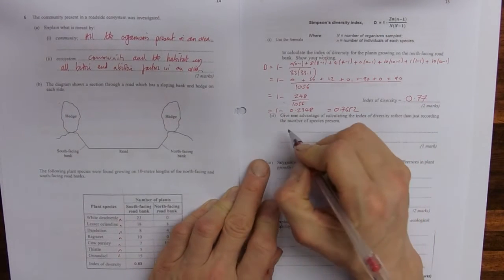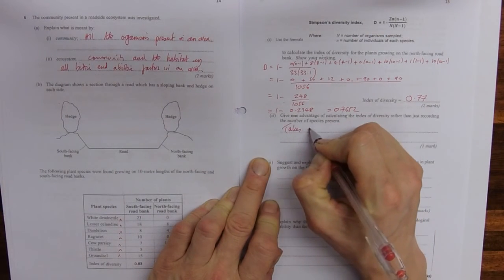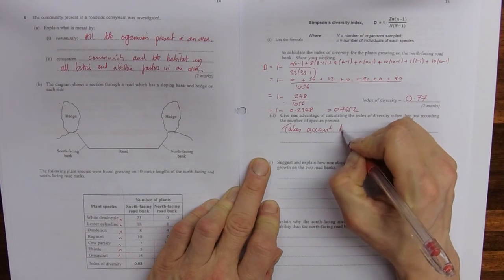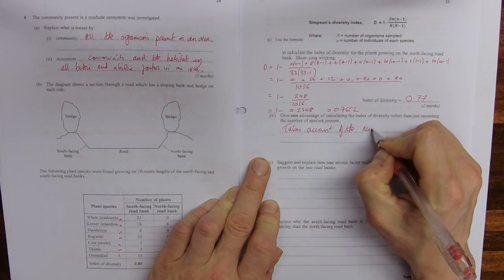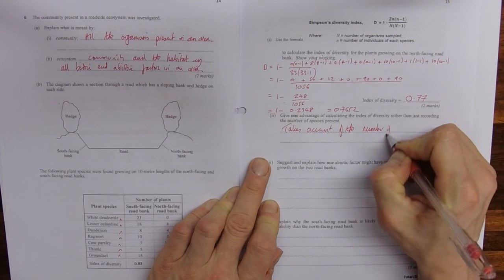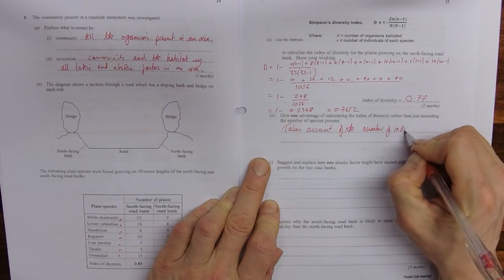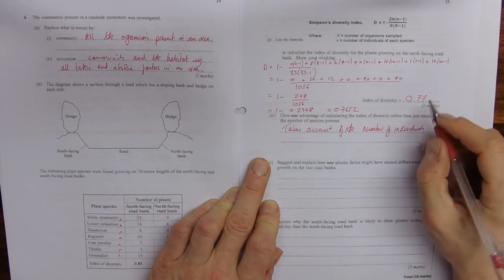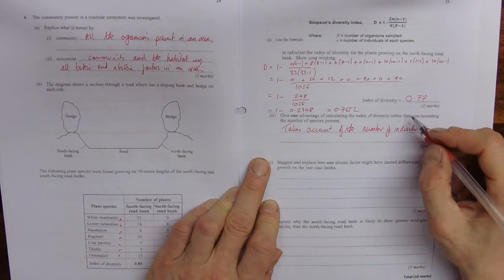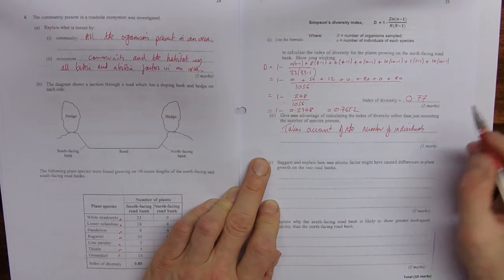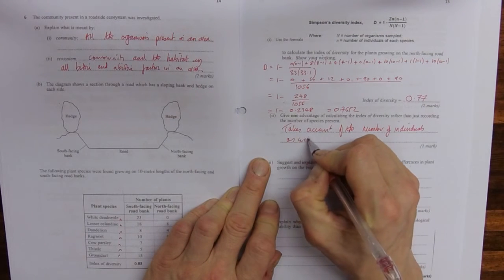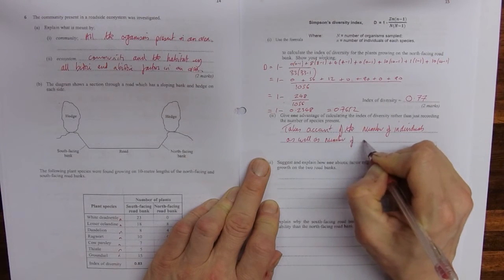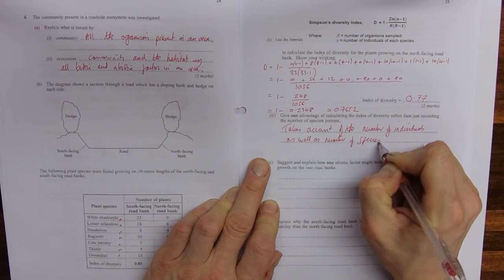So this index takes into account the numbers of individuals as well as the variety of species. So it takes account of the number of individuals, the population size, as well as the number of species.